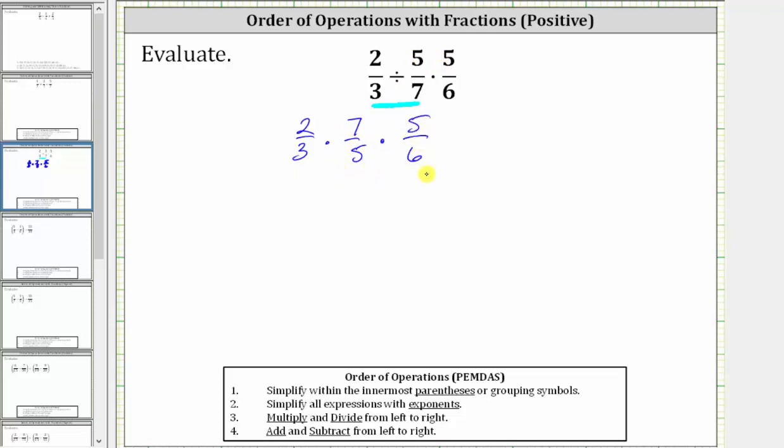Notice now we have a product of three fractions. To multiply fractions, we multiply the numerators and denominators, but we normally simplify out the common factors other than one between the numerators and denominators before multiplying. So let's write this as a single fraction